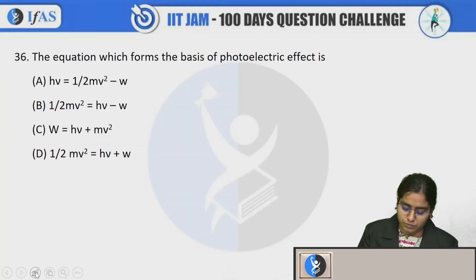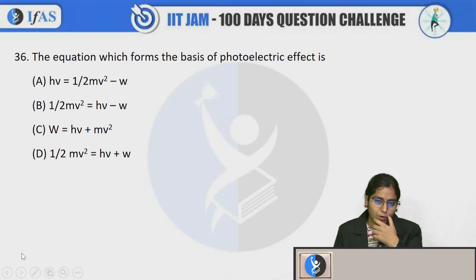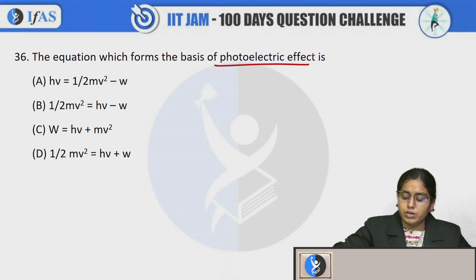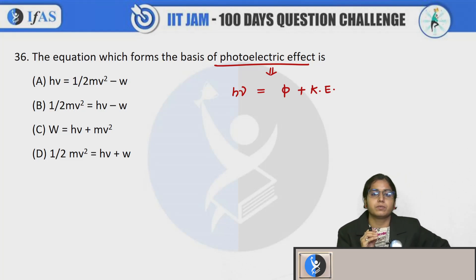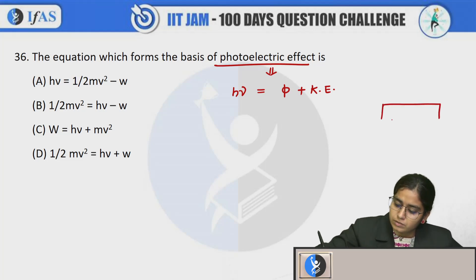I will start with the first question. This question is from the photoelectric effect. The equation which forms the basis of photoelectric effect - if I talk about photoelectric effect, we know that the incident frequency or incident energy gives us the work function phi plus your kinetic energy. This is the basic equation that we have - a metal plate, some h nu radiations are coming onto this plate. There will be some work function.